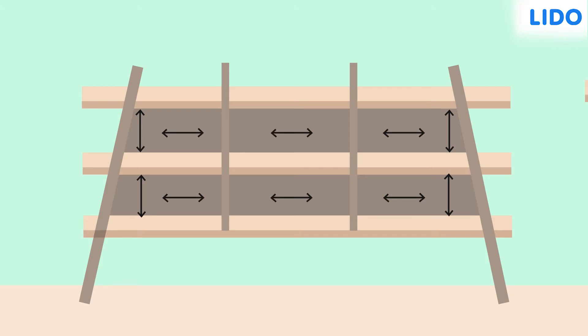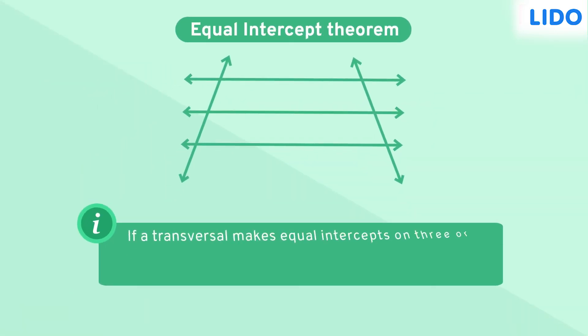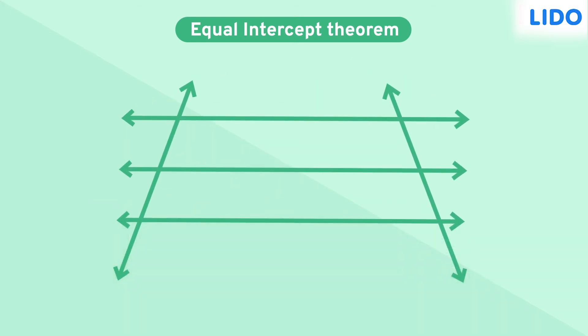This reminds me of the equal intercept theorem which states that if three parallel lines make equal intercepts on one transversal, then they make equal intercepts on another transversal. Let's try to prove it.